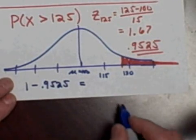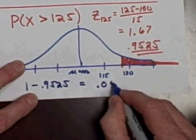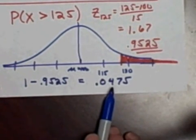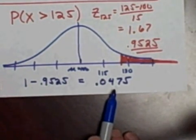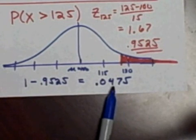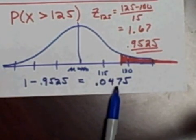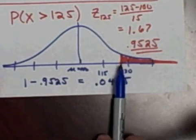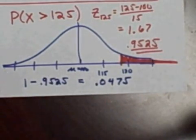And this gives me an answer of 0.0475. And that is a tiny bit less than 5%. We're saying just a little bit under, where precisely 4.75% of the population has an IQ higher than 125.